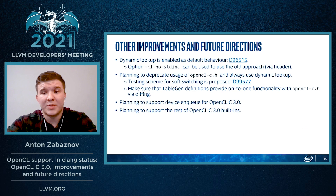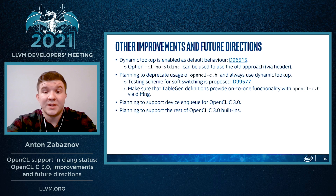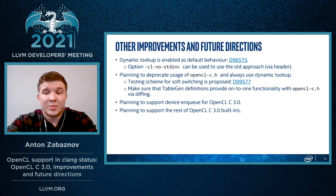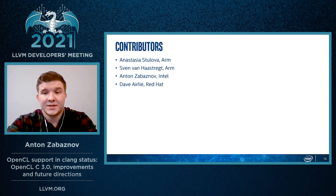In the future, we are planning to fully deprecate the internal header by extending the fast TableGen-based approach with all the missing built-ins. To achieve this goal, a soft switching scheme is proposed. The internal Clang header can be used later for testing when we refine the contents of the TableGen-based implementation. And of course, we plan to finish the support of OpenCL C3 with supporting device and queue and the rest of the OpenCL built-ins.